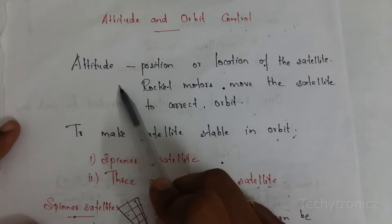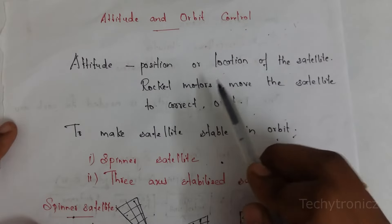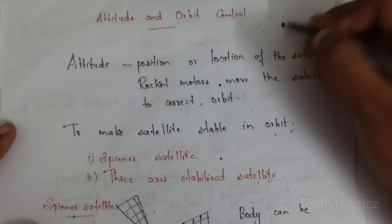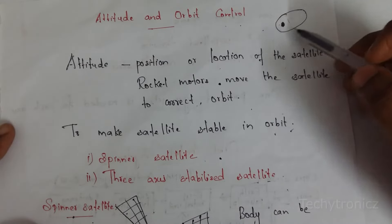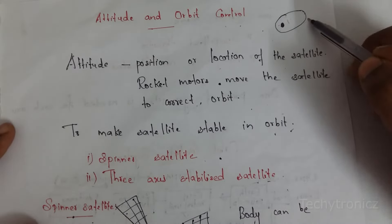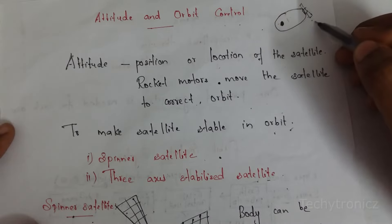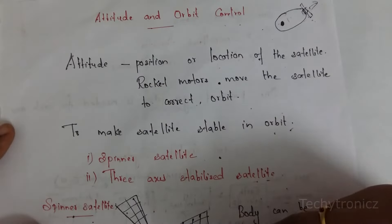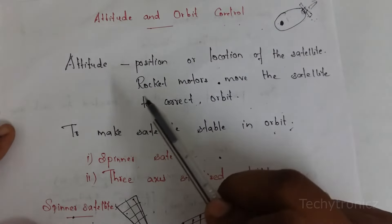Attitude control system deals with the position or location of the satellite. The satellite rotates in an orbital path. Consider the Earth at the center, and the satellite moves in an elliptical or orbital path. Due to gravitational force or external forces acting on the orbital path, the satellite may drift. That is why we use attitude control subsystems.